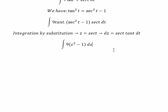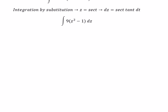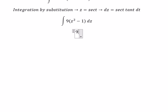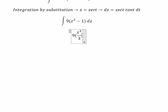Now we can get the final answer. The integral of z squared gives us z to the power of 3 over 3.